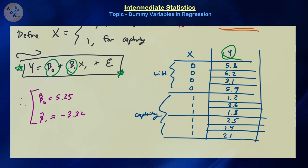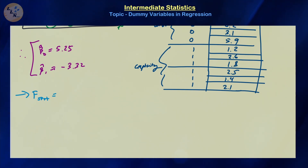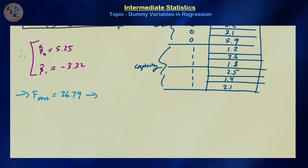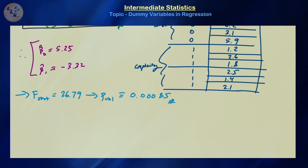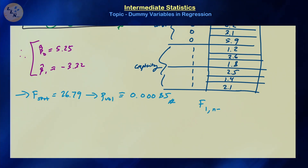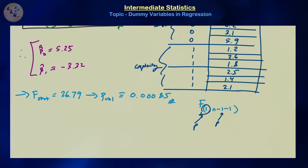That is our predicted model — it gives the predicted lifespan for a particular squirrel type. More importantly, the F-test statistic is approximately 26.79, generating a p-value of approximately 0.00085, associated with an F distribution with 1 and n minus 2 degrees of freedom. That's based on the number of predictor variables (p minus 1), which you can extend to the multiple linear regression case.